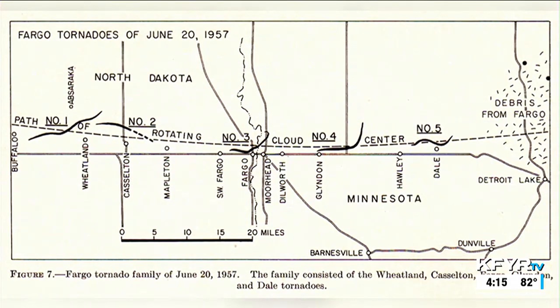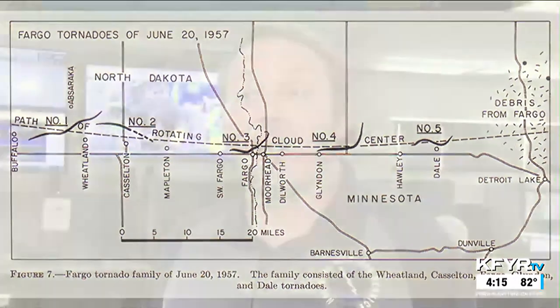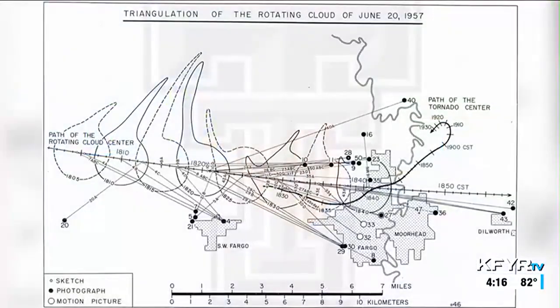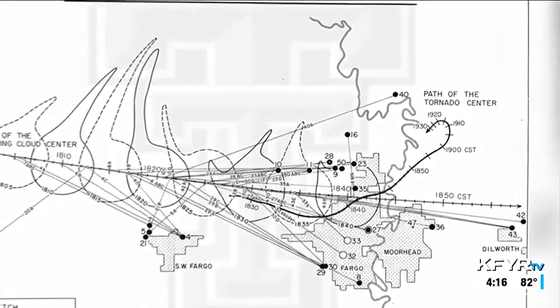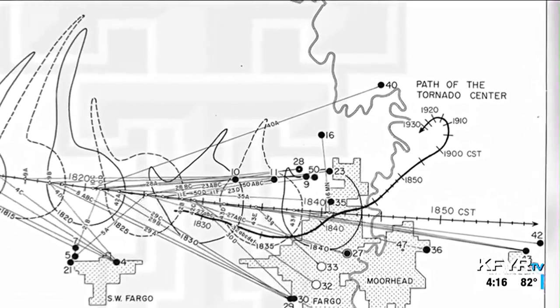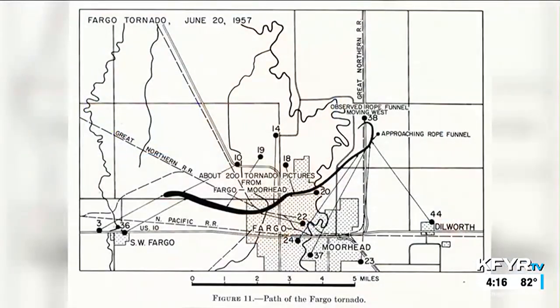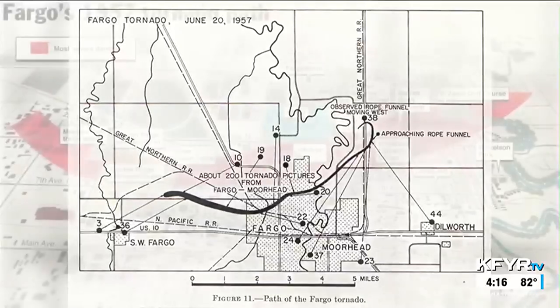Looking at the tracks, cyclical supercells — those that produce multiple tornadoes — often near the end of their paths turn in a much different direction than earlier in their lifecycle. In this case, the tornadoes moved generally eastward but near the tail end shifted northward, diminished, and then a new tornado would form further to the east by some miles.